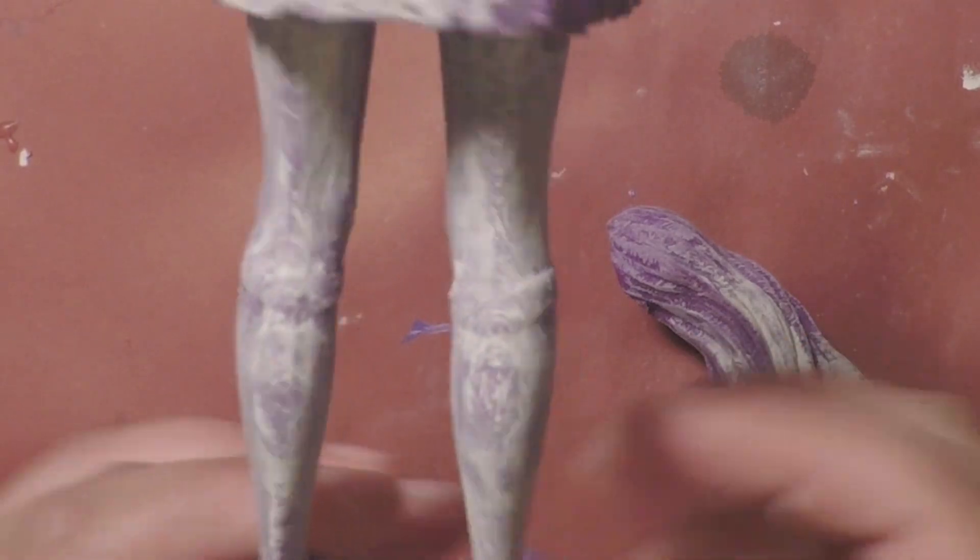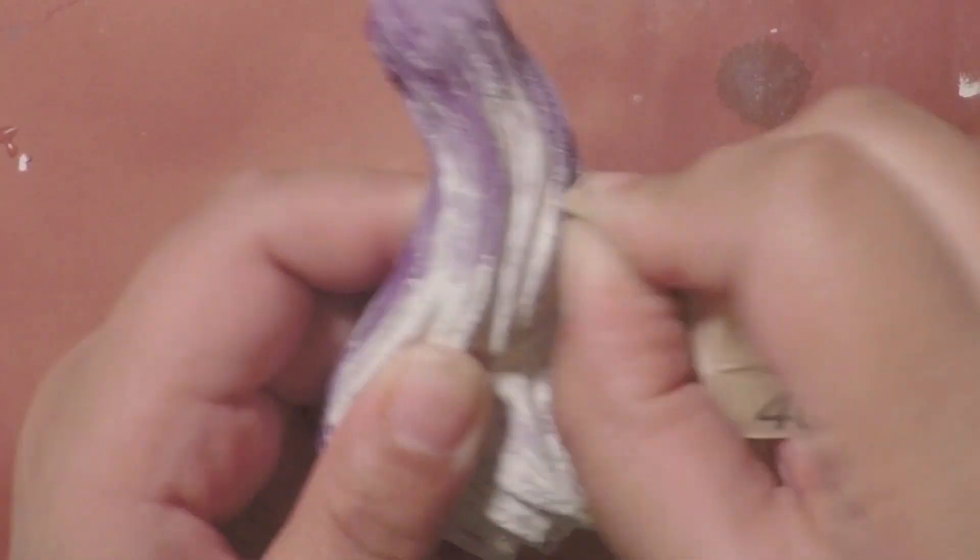Here is a shot of Yuri's hair after applying some spackle and sanding it down. I forgot to mention earlier, it's always important to wear a mask when sanding. There will be plastic and spackle dust everywhere, which can be bad for your lungs. Here I'm just going back in with the sandpaper to get the hair extra smooth.